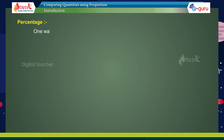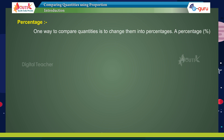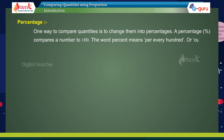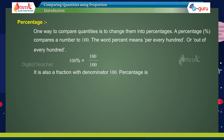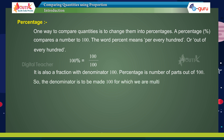Percentage: one way to compare quantities is to change them into percentages. A percentage compares a number to 100. The word 'percent' means 'out of every hundred.' 100% equals 100/100. It is also a fraction with denominator 100. Percentage is the number of parts out of 100, so the denominator is to be made 100 by multiplying both numerator and denominator by the required factor. We can use percentage as a common scale.